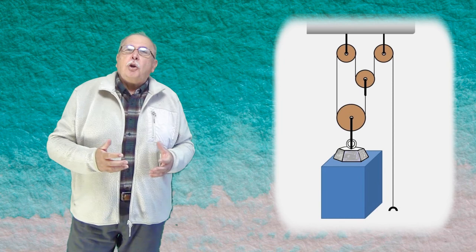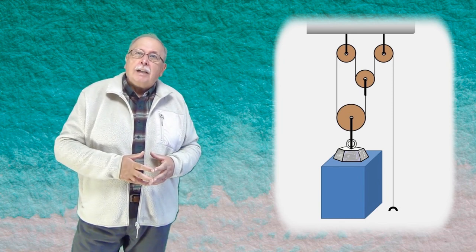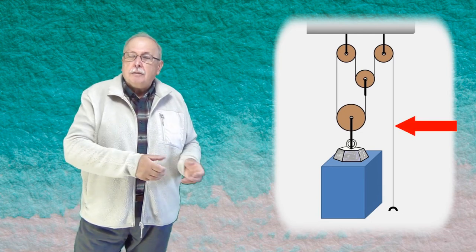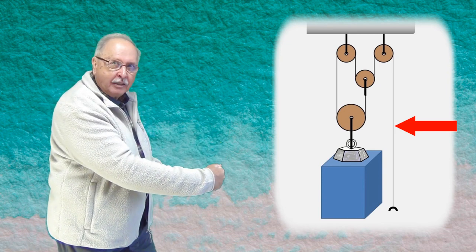Și acum două întrebări. Prima. Ce se întâmplă dacă trag de partea din dreapta a firului, cea legată de dușumea? Deci prind de acel fir și trag în jos de el. Ce se întâmplă în acest caz?